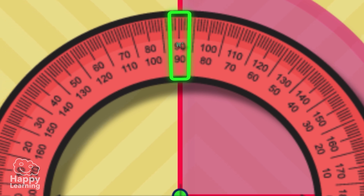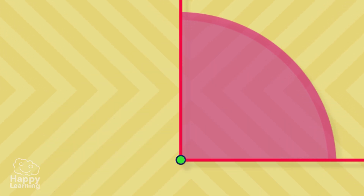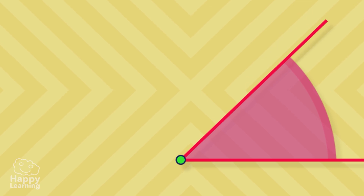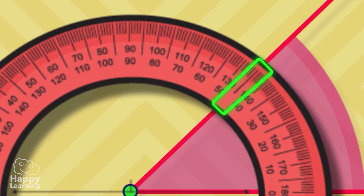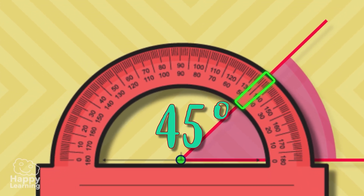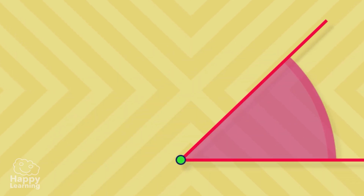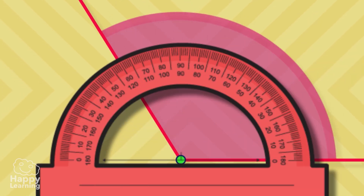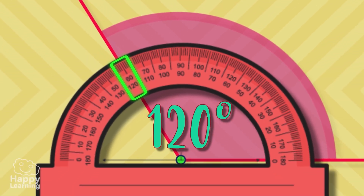Let's practice! The right angle is 90 degrees — let's check with the protractor. Indeed, a right angle is 90 degrees. Now let's measure this angle — it measures 45 degrees. It's an acute angle because it is smaller than a right angle.